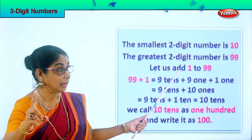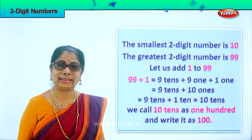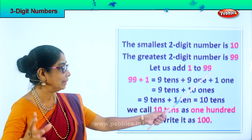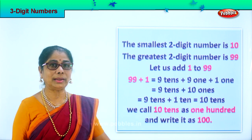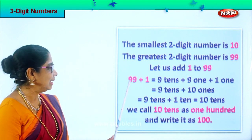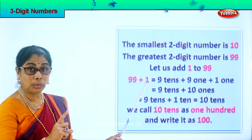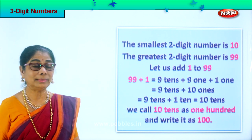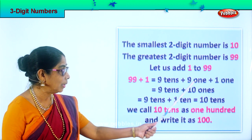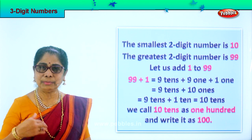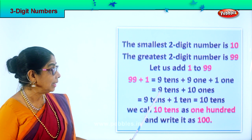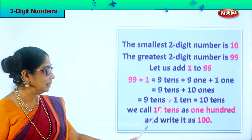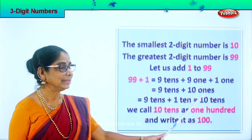Let us add one to ninety-nine. What will we get? Ninety-nine plus one more is equal to nine tens, nine ones, and one more one. That is nine tens plus nine plus one — ten ones. Here you have nine tens, and here you have nine plus one — ten ones.